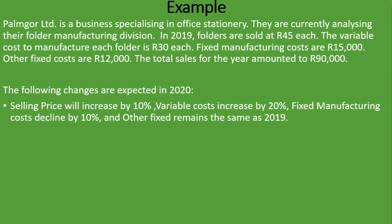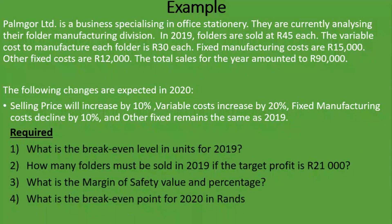So what are we required to do? The first requirement is: what is the break-even level in units for 2019? The second question is: how many folders must be sold in 2019 if the target profit is R21,000? The third one is: what is the margin of safety value and percentage? And the fourth requirement is: what is the break-even point for 2020 in Rands?